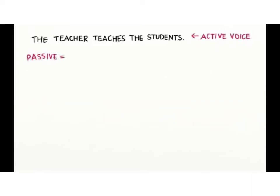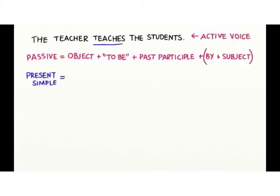In order to change this to passive, we'll put the object first, plus the verb to be, plus a past participle, plus the word by, plus the subject. Remember, by the subject is optional in passive voice. Okay, let's change this sentence to a passive one. This sentence is in simple present tense. Let's follow the formula.